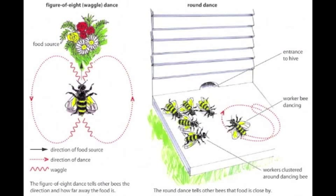Communication enables the bees in a hive to work together. Bees searching for flowers find their way to and from the hive using the position of the sun in the sky. When they return to the hive, the bees tell the other bees where the flowers are by dancing, either at the hive entrance or on the honeycombs inside. The type of dance and the angle of the movements tell the other bees the distance and direction they need to fly.